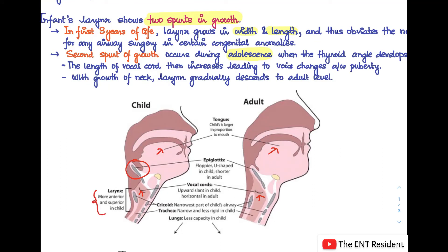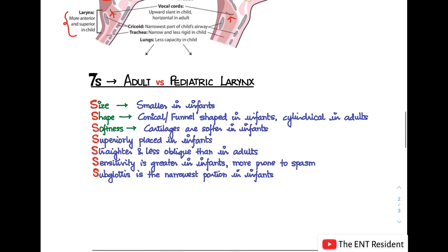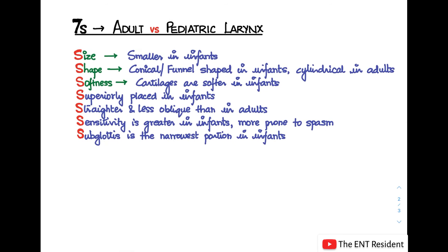A simple mnemonic to remember the differences is the Seven S's. First: Size — smaller in infants. Second: Shape — conical or funnel-shaped in infants, cylindrical in adults. Third: Softness — cartilages are much softer in infants. Fourth: Superiorly placed in infants. Fifth: Straighter and less oblique than in adults. Sixth: Sensitivity — greater mucosal sensitivity in infants, making them more prone to spasms and obstruction. Seventh: Subglottis is the narrowest portion in infants.